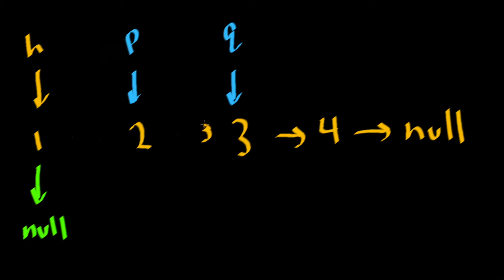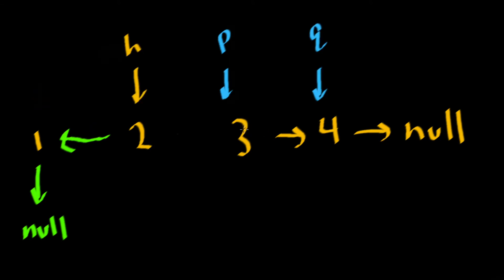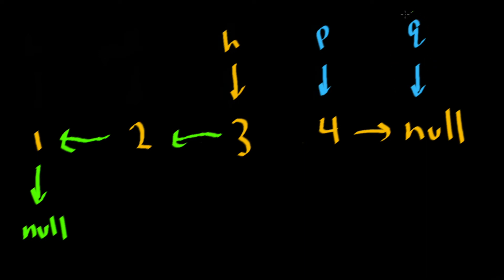So let's go ahead and change what two is pointing to — we'll now set that equal to one. And then we'll go ahead and move our pointers. We want to take whatever P is pointing to and point it to what head is currently pointing to. And we want to go ahead and move our pointers again. At this point, we said we're going to continue until our Q is equal to null, which it is. So now we need to do one more cleanup step: we need to take whatever P is pointing to and set it equal to head. At this point, we've successfully reversed our list. We now have four pointing to three, pointing to two, pointing to one, pointing to null.